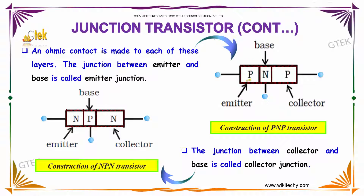Only one contact is made to each of these layers. The junction between the emitter and the base is called the emitter junction. The junction between the collector and the base is called the collector junction.